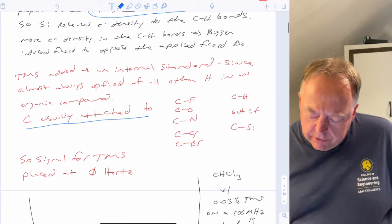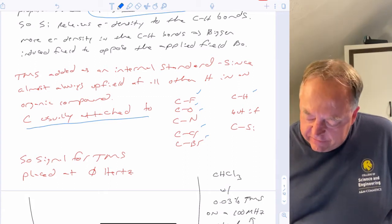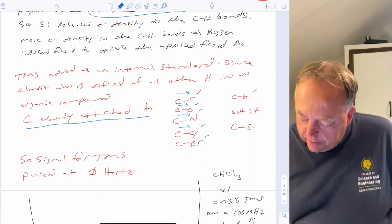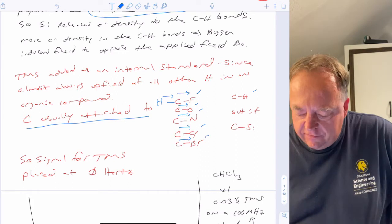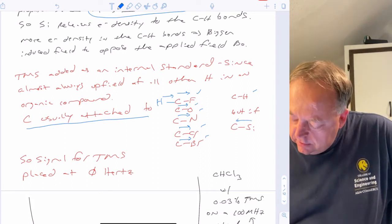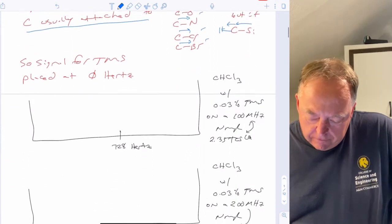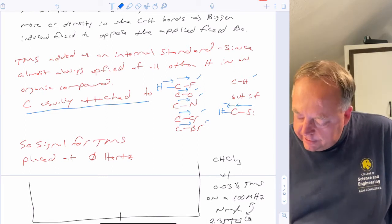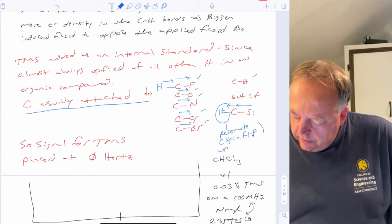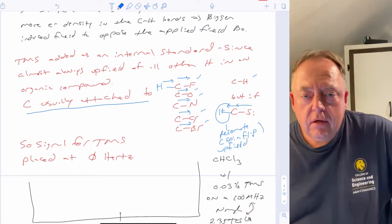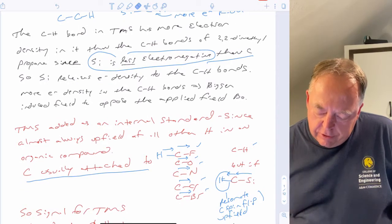The signal will be further upfield than it would otherwise be. This is significant because carbon is usually attached to fluorine, oxygen, nitrogen, chlorine, or bromine — all more electronegative than carbon — which remove electron density from the C-H bond. Silicon is less electronegative than carbon, which increases electron density in the C-H bond. So this hydrogen would resonate upfield of almost all hydrogens in a molecule.